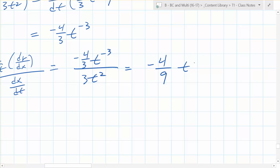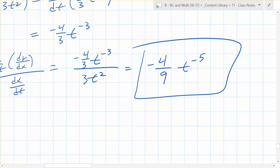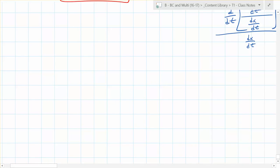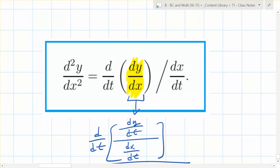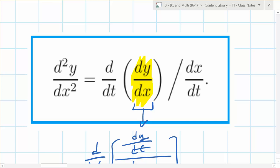Simplifying gives negative four over nine t squared — that's the second derivative of y with respect to x in parametric form. Just like in standard calculus, the second derivative in parametric tells you about concavity. That's a lot for today — thank you for suffering through it. Two smiles from the front row!